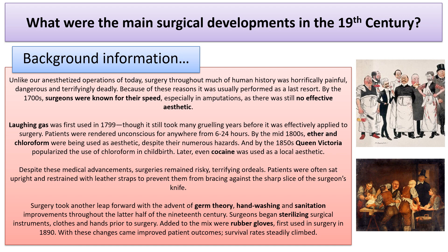By the 1700s, surgeons were known for their speed, especially in amputations, as there was still no effective anaesthetic. Laughing gas was first used in 1799, though it still took many gruelling years before it was effectively applied to surgery.